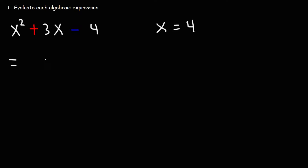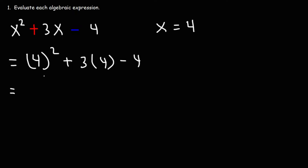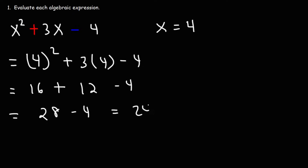This is going to equal 4 squared plus 3 times 4 minus 4. 4 squared is 4 times 4, which is 16. 3 times 4 is 12. 16 plus 12 is 28, and 28 minus 4 is 24. So that's the answer for the second example.